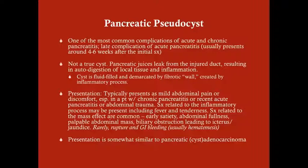A pancreatic pseudocyst is one of the most common complications of acute and chronic pancreatitis. When occurring after acute pancreatitis, it usually presents around four to six weeks after onset — consistent with this patient's timeline. With chronic pancreatitis it can happen at any time. It can also result from abdominal trauma, such as a direct blow to the abdomen.